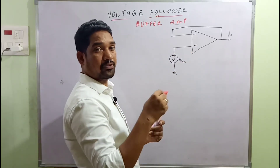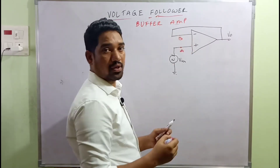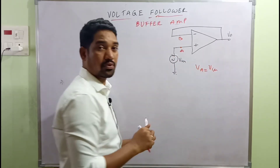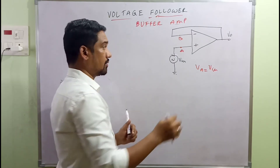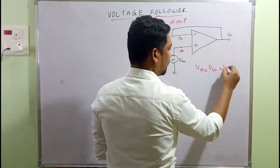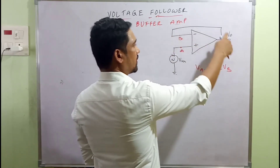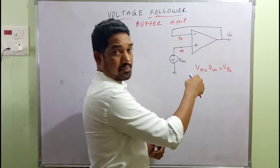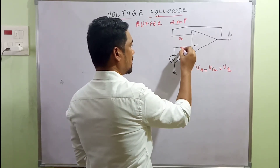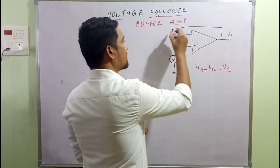Let this be node A and this be node B. VA is equal to V-in. According to the virtual ground concept, the voltage appearing on either side of the operational amplifier is the same, so VB is also equal to V-in. Since there is no attenuation — no resistor, no capacitor, just a direct connection — the same V-in appears here.